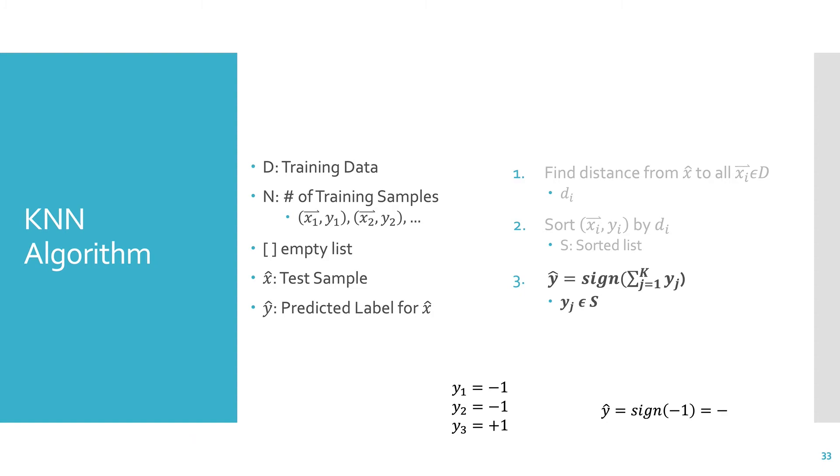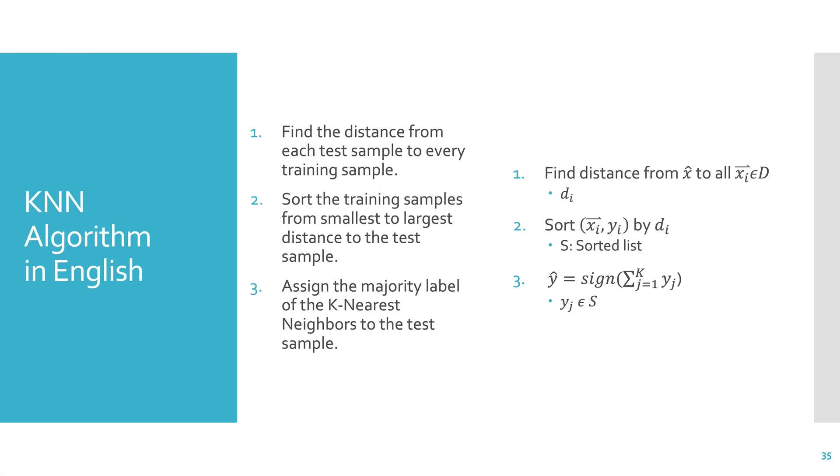So again, if we have an example where we have two negatives and one positive, we take the sign of the sum, and the sum is negative 1. Then we get negative, and we predict a negative label. Here's another example. We sum these up, we get positive 3. The sign of positive 3 is positive, and we predict positive.